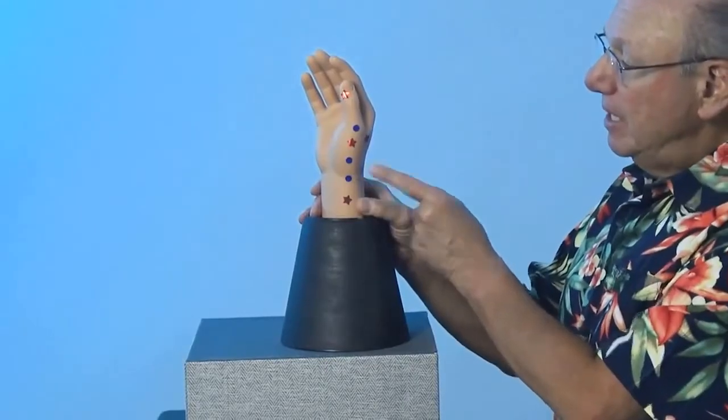To locate Lung 8, find the spot that is at the thumb side of your wrist crease, right about here.